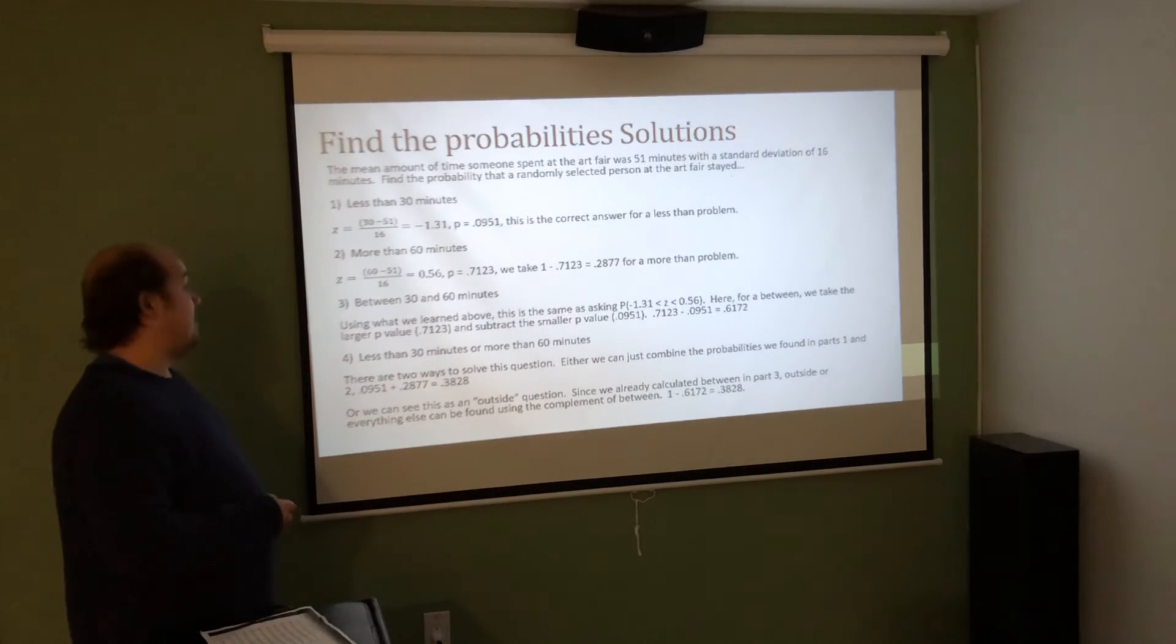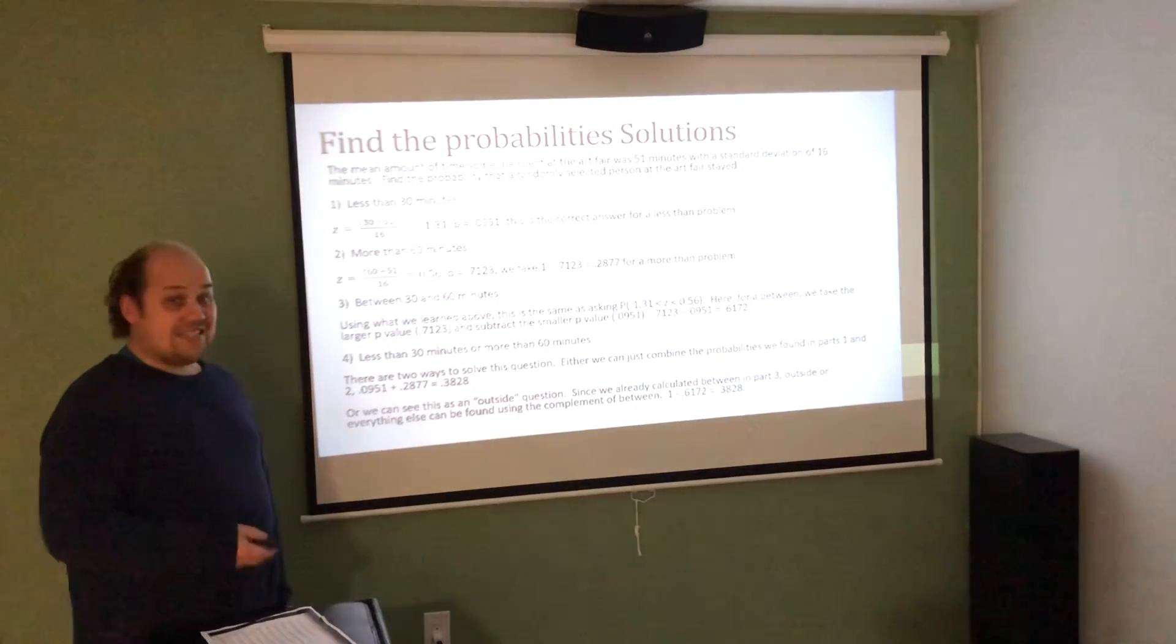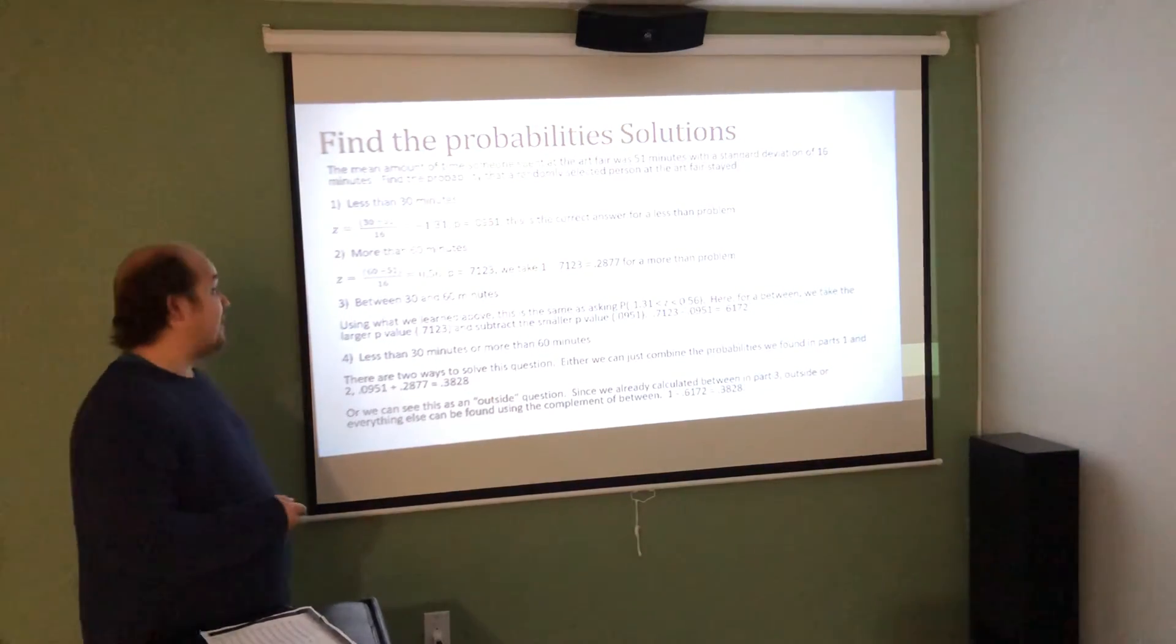For less than 30, I get a z-score. 30 minus the mean of 51 over 16 gives me negative 1.31. The p-value, 0.0951, that I look up, is exactly the correct answer because I wanted less than 30.